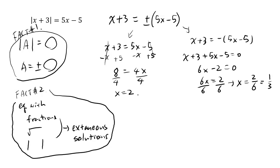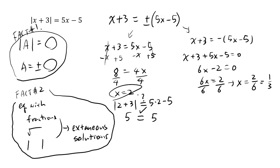We got two solutions, but it's not over yet. We have to figure out if any of them are fake solutions. Let's plug in 2: 2 plus 3 is 5, absolute value of 5 is 5. On the other side, 5 times 2 is 10, minus 5 is 5. So both sides equal 5 — this is a valid solution.